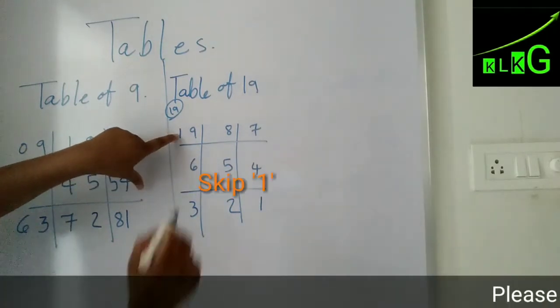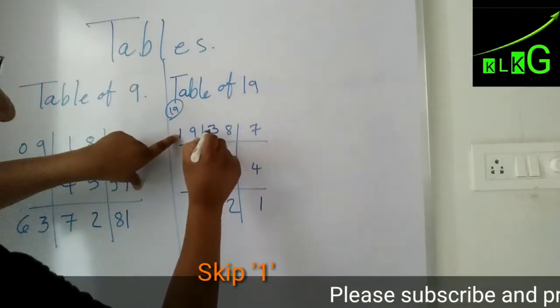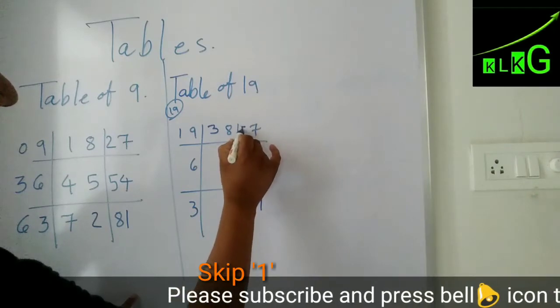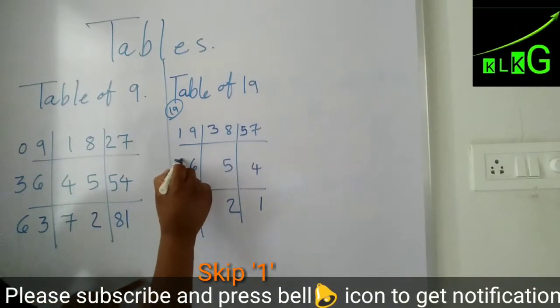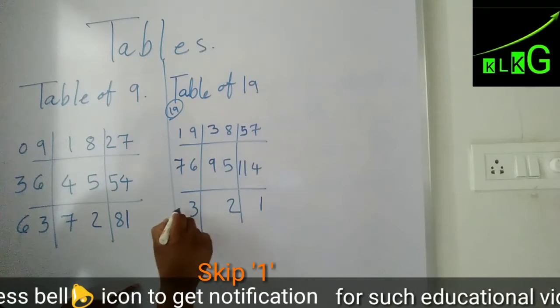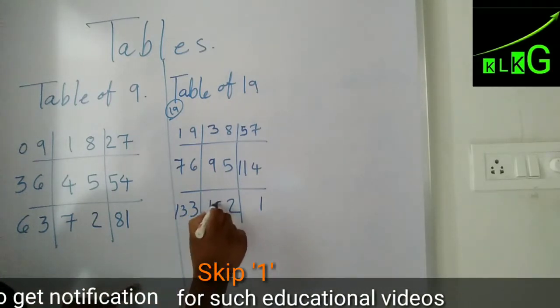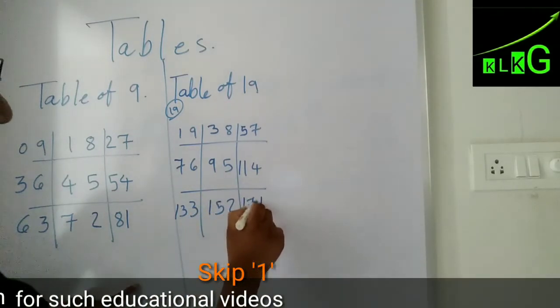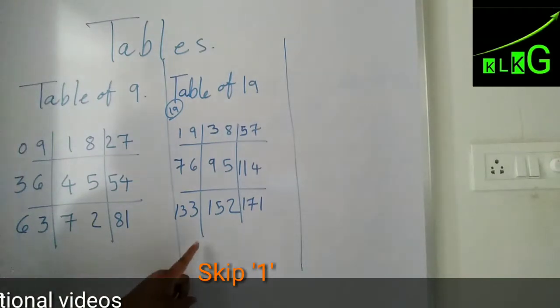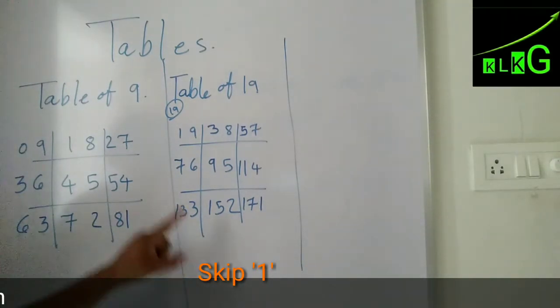Then 1, then 3. You have to skip one number. Then 5, then 7, skip and write 9, 11, 13, 15, and 17. So this becomes your table of 19.